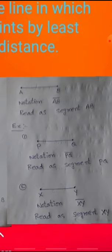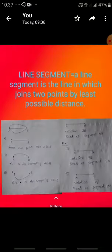For example, PQ line segment: notation is PQ bar, read as 'segment PQ'. Another example: two points X and Y form line segment XY. Notation is XY bar, read as 'segment XY'.